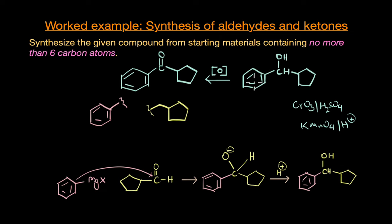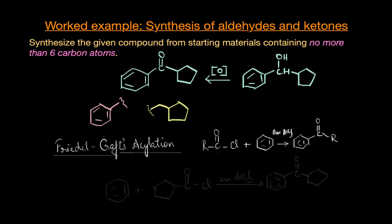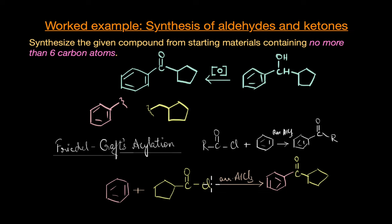There is also a more direct alternative: Friedel-Crafts acylation. The general reaction is RCOCl reacting with benzene in the presence of anhydrous AlCl₃ as catalyst to form C₆H₅COR. Because the reactants cannot have more than six carbon atoms, the COCl group must be added to the cyclopentyl group. Reacting benzene with that acid chloride in the presence of anhydrous AlCl₃ gives the exact desired ketone. There are many other possibilities worth exploring.